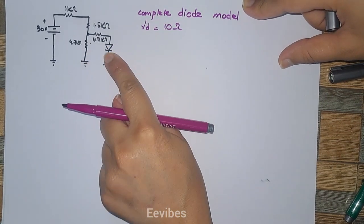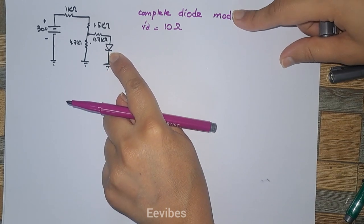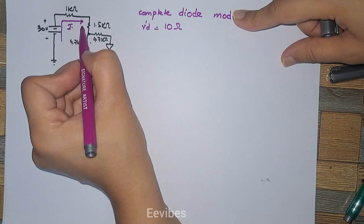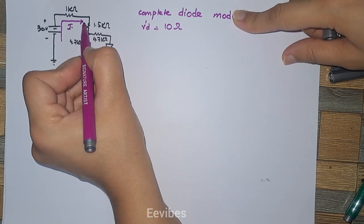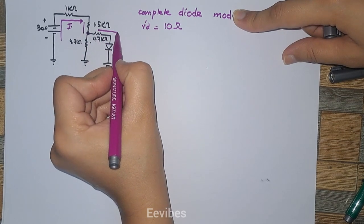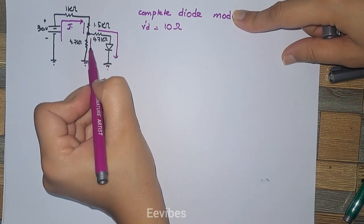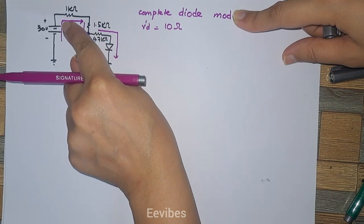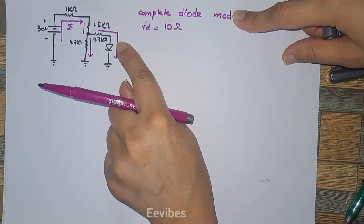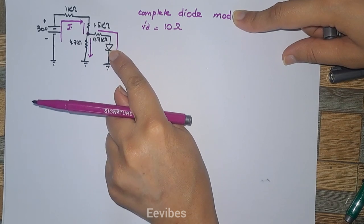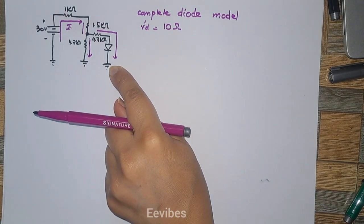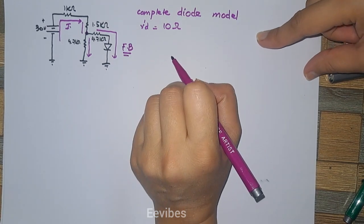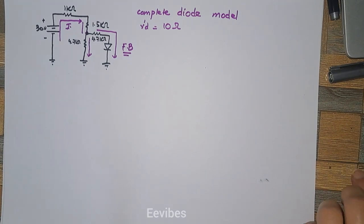First of all, we will see whether this diode is forward biased or reverse biased. The total current I is flowing through this circuitry as a positive current. When it reaches this junction it will take two paths — one through the diode and the other through the resistor. Since this current is positive, it enters at the anode terminal while the cathode terminal is held at zero potential, so this diode is forward biased.